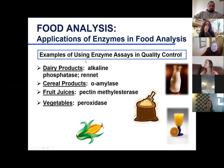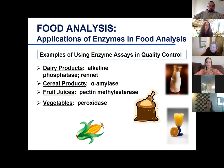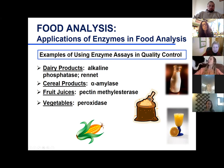Our last slide comes back and reminds us there are lots of applications of enzymes in food analysis and food processing: alkaline phosphatase for adequacy of pasteurization; rennet for making cheese — we have to make sure we have enough rennet for a big vat; alpha-amylase, which we've talked about several times; pectin methylesterase linked to orange juice cloud loss; and peroxidase as an indicator of adequacy of blanching.